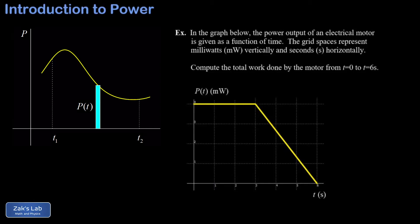We already know that power multiplied by a change in time gives us an amount of work done, so the area of that rectangle represents the work done on a tiny interval of time. To compute the total work done on the time interval t1 to t2, we add up all the rectangles on the interval.